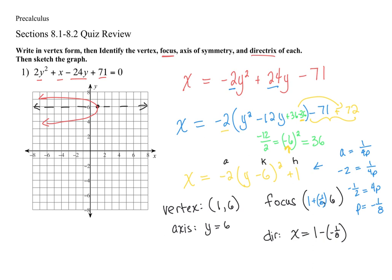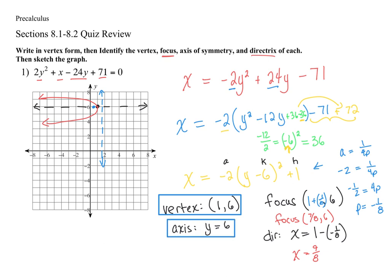For my focus, I take the x value of my vertex and add negative 1/8, giving me 7/8. For my directrix, I take that x value and subtract negative 1/8, giving me x equals 9/8 (or 1 and 1/8). So my focus is 1/8 in front of the vertex at (7/8, 6), and my directrix is 1/8 behind it. So now I've found all pieces: vertex, axis of symmetry, focus, and directrix.